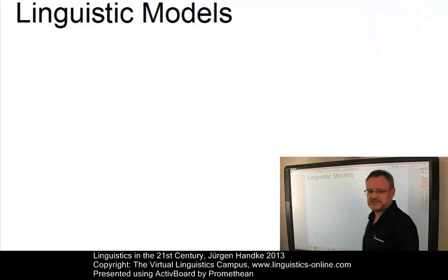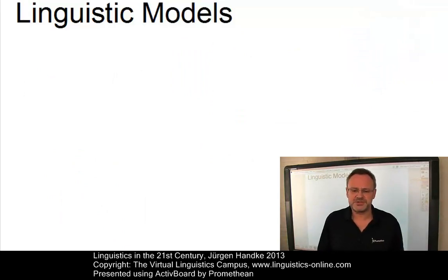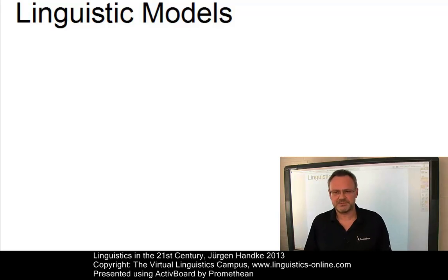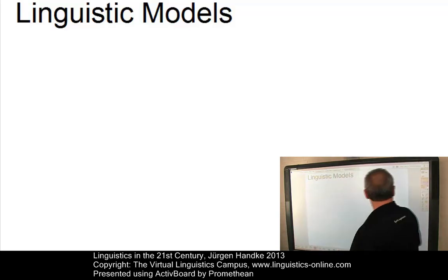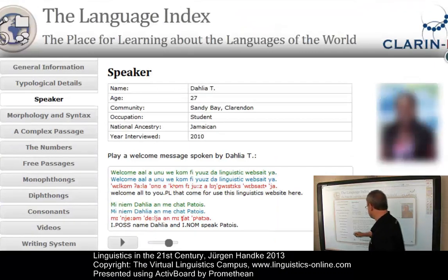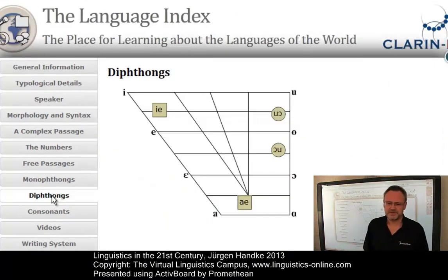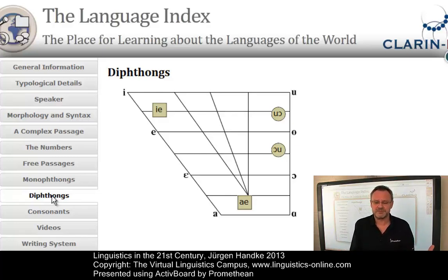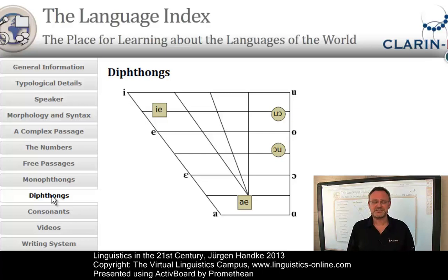In linguistics, the modeling of hypotheses and theories has always played an essential role in education and research. Let me illustrate this with three examples. The first comes from our language index again — let me look at Dalia's diphthongs. If you want to present the diphthongs of a language and show the transitional paths of their glides in a traditional format, you are confronted with enormous presentational problems. But if you use a multimedia format, these problems disappear and we can easily enhance the explanatory value of our presentation.